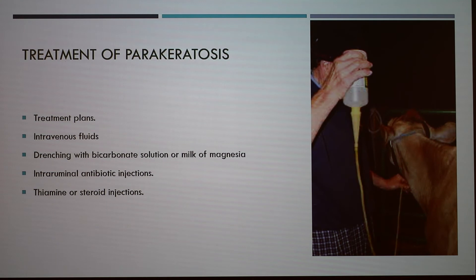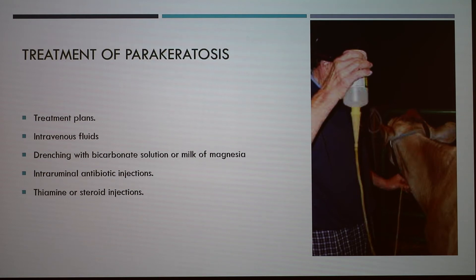In terms of treatment, a veterinarian will give you a treatment plan based on the severity of the disease. Treatments include intravenous fluids, drenching with bicarbonate solution or milk of magnesia, intra-ruminal antibiotic injections, thiamine or steroid injections, and surgery for very valuable animals. Following acidosis and paracarotosis, the rumen lining takes up to about six weeks to repair, so recovering animals will show poor growth rate during this time and can also develop secondary infections.